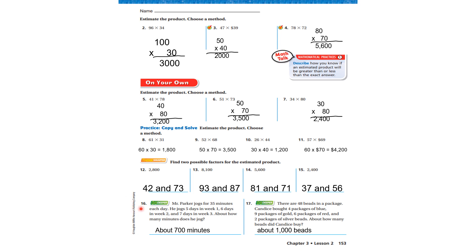Let's look at 16. Mr. Parker jogs for 35 minutes each day. He jogs five days a week in week one, six days a week in week two, and seven days a week in week three. About how many minutes does he jog? Well, it's going to be around 700. Because if I round 40 times five is 200 and 40 times six is 240 and 40 times seven is 280. I add all those up. It's 720. So it's going to be about 700.